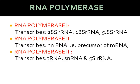RNA polymerase II transcribes heterogeneous nuclear RNA, which is the precursor of mRNA — meaning mRNA is formed from HnRNA. RNA polymerase III transcribes transfer RNA, small nuclear RNA, and 5S ribosomal RNA.